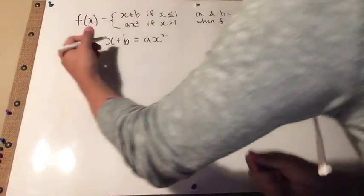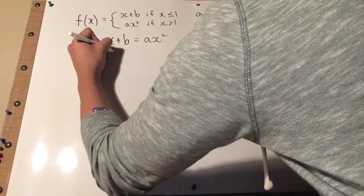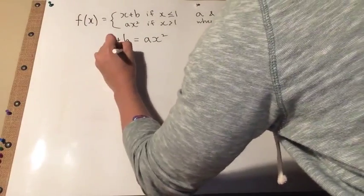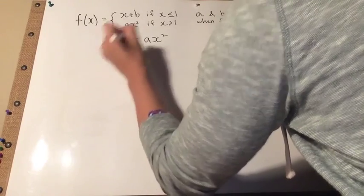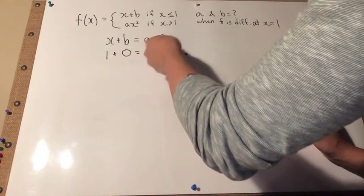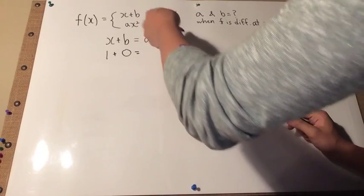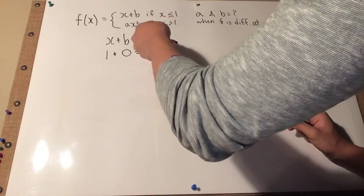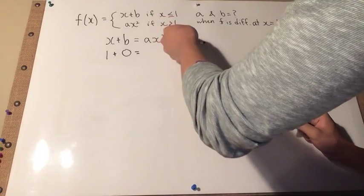If you derive it, the formula would become 1 plus 0 would equal, and for this case, the a would stay because it's still a constant. And with the power rule, you multiply the constant with the x exponents.